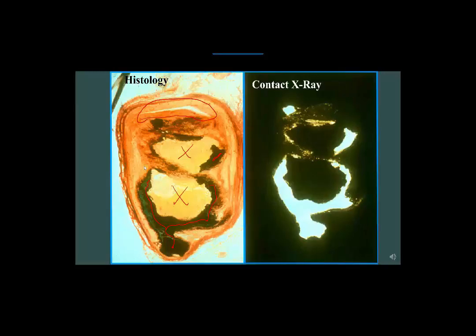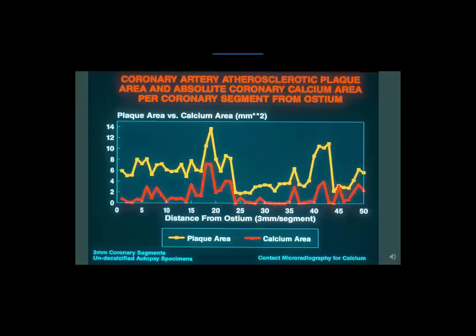You'll also notice there are other areas with green birefringent material. These are areas where the Mason-Goldner trichrome stain picks up what's called calcium hydroxyapatite. Next to this is a contact microradiograph of exactly the same coronary section. The areas of calcium hydroxyapatite correspond directly with areas of calcification noted in the same histologic segment, indicating the standard association of coronary calcification seen on x-ray with the actual finding of calcium hydroxyapatite.